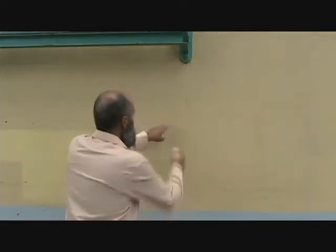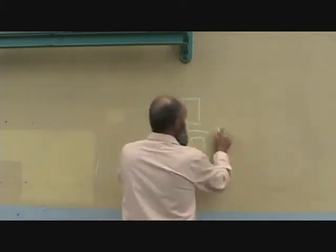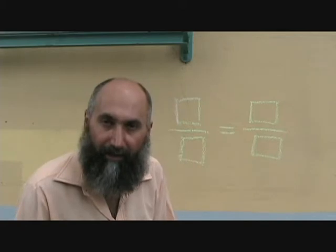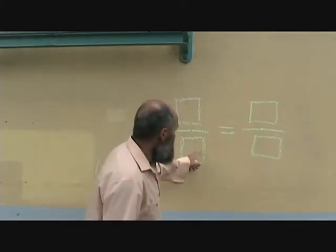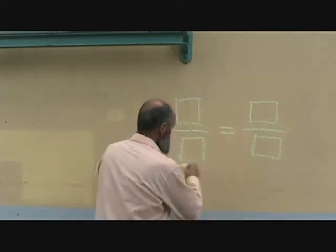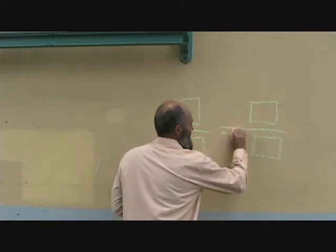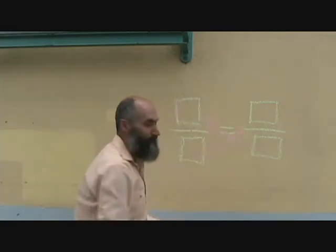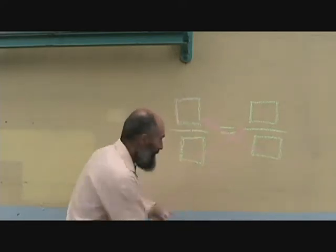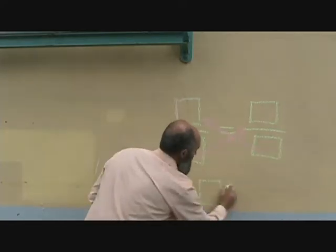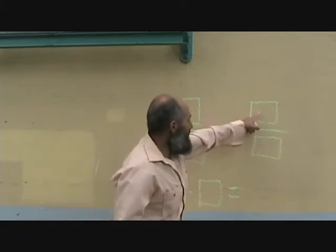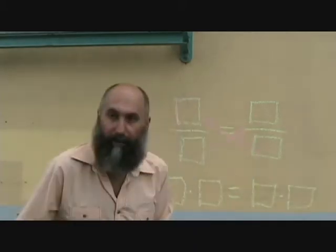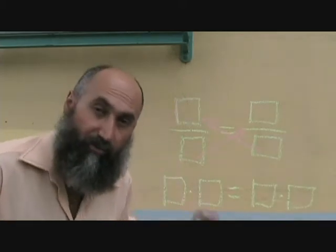So the way it works is, if you have one fraction equal to another fraction, what you can do is take this, kick it up here, and take this, kick it up here. So in the end, what you end up with is this box times that box is equal to this box, whatever is in there, times this. It's as simple as this. It's super powerful.